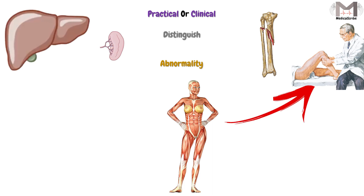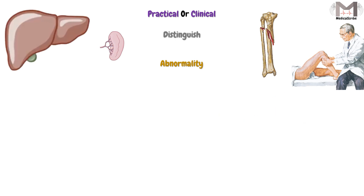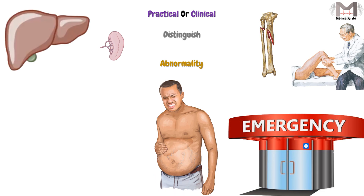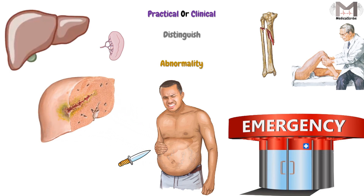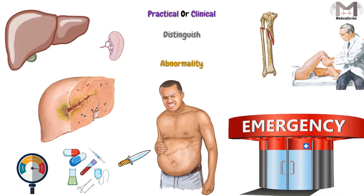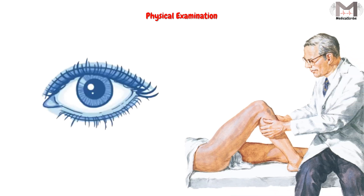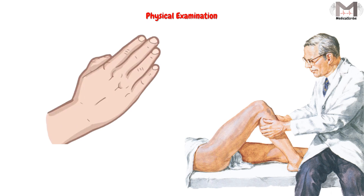Now I will give you two examples to clarify the importance of surface anatomy in real life. Imagine you are in the emergency department when someone stabbed by a knife in his upper right abdomen presents to you. If you understand surface anatomy well, you will imagine which structures may be damaged due to the stab — this is a very critical issue in order to assess the severity of the case and how to manage it.